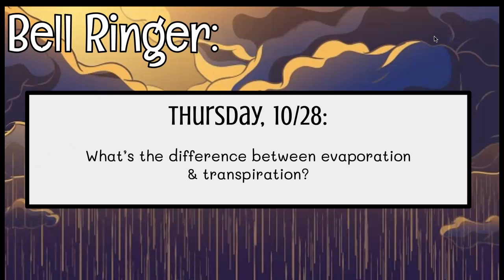So it's when liquid turns to gas. The only difference is that evaporation is going to occur over a body of water — like the ocean, a lake, a river, a stream. Transpiration is evaporation, but it's coming from trees or plants.